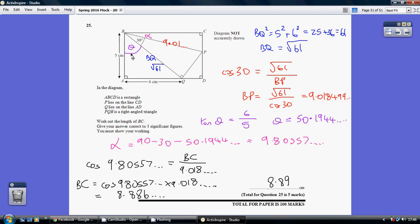Now, given this is a right angle, I can now work out alpha to be 90 minus theta, which I've just worked out to be 50.19 less than 30. So alpha is 9.80557 dot dot dot.